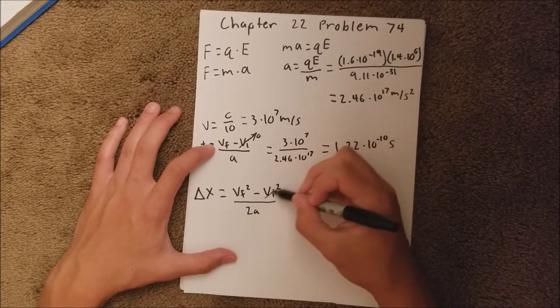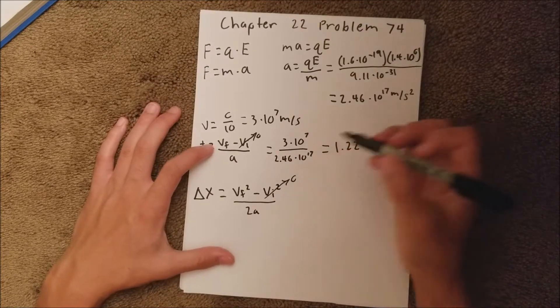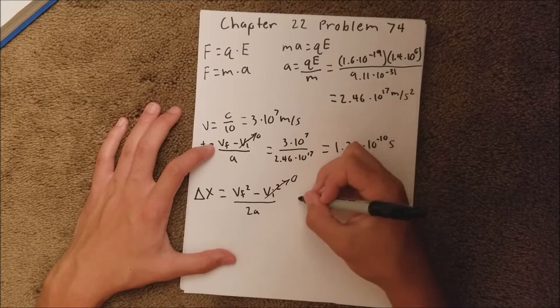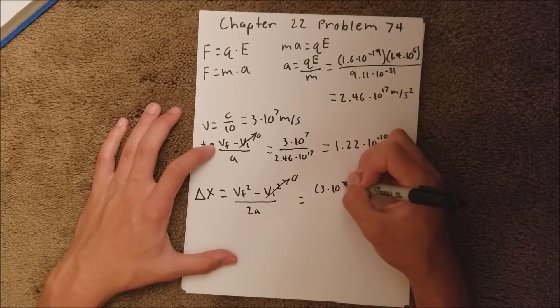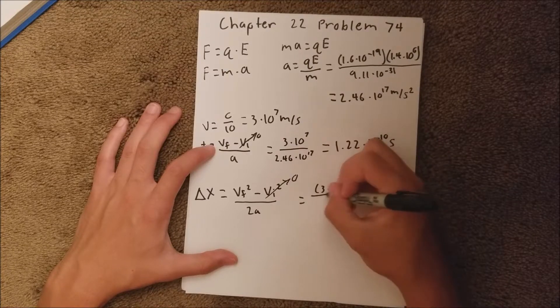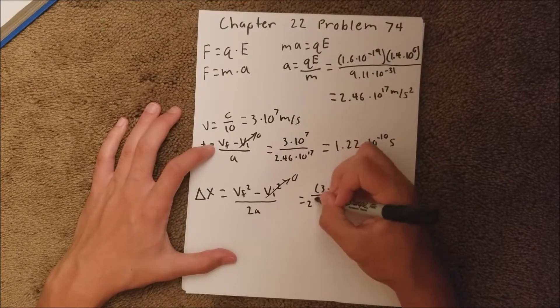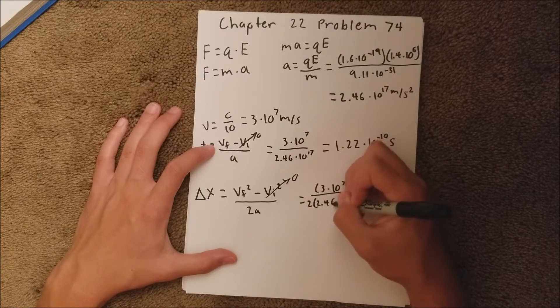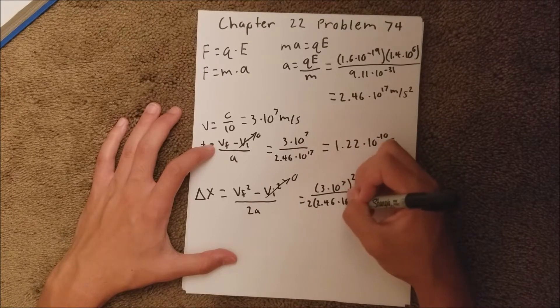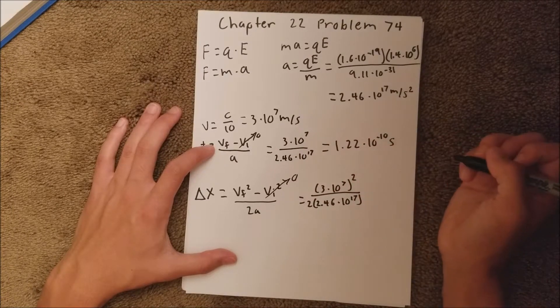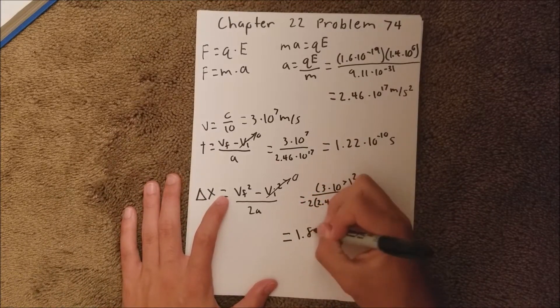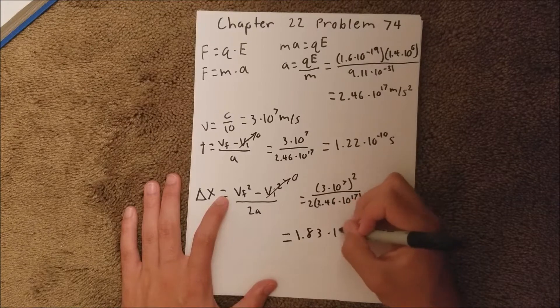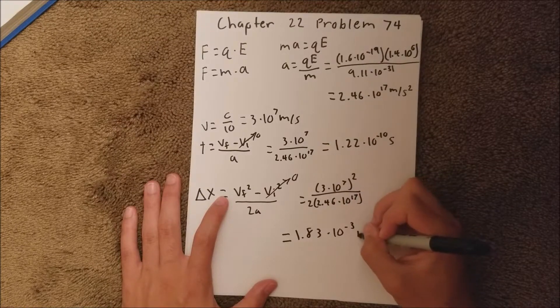And again, our initial velocity is 0, so we can set that equal to 0, and that's going to equal 3 times 10 to the 7th squared over 2 times 2.46 times 10 to the 17th. And when you plug that into your calculator, you should get 1.83 times 10 to the negative 3rd meters.